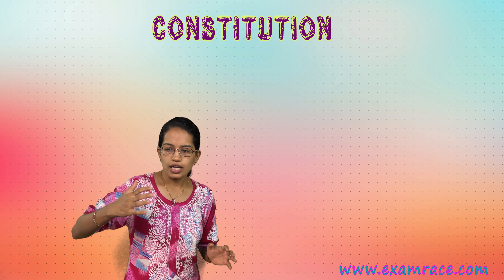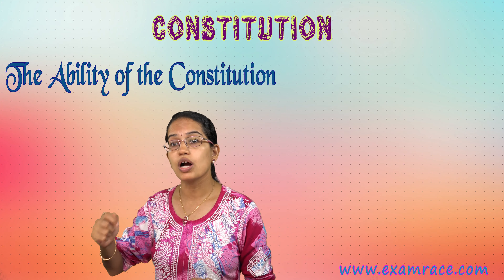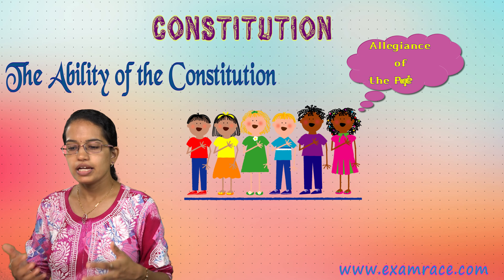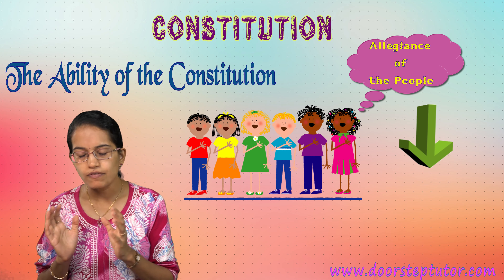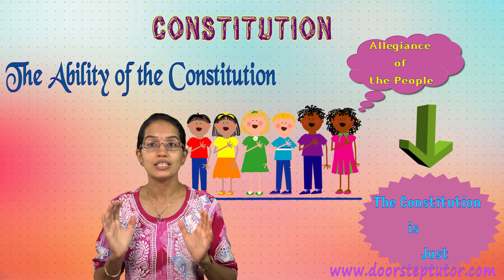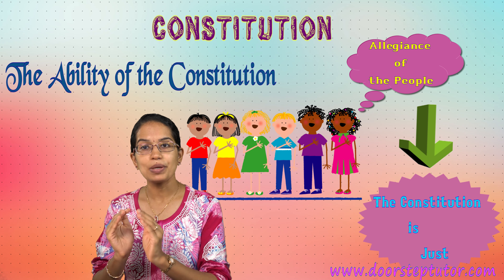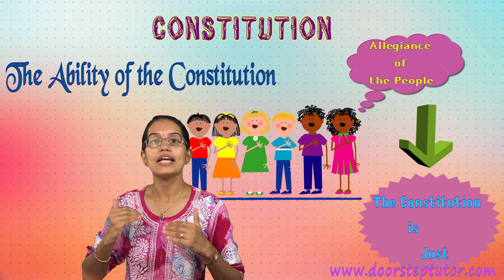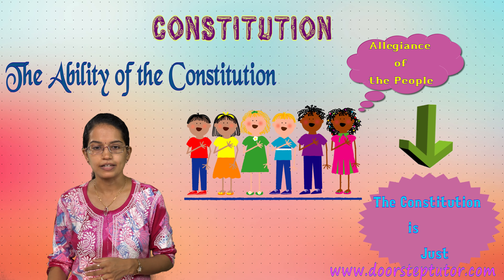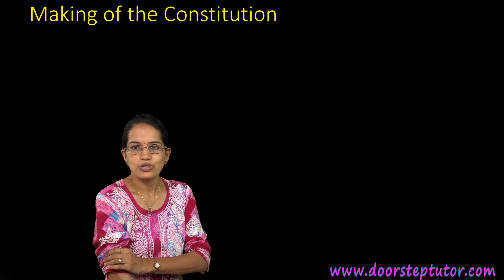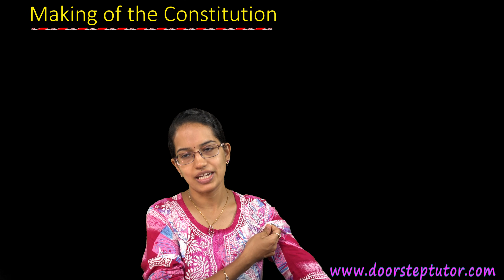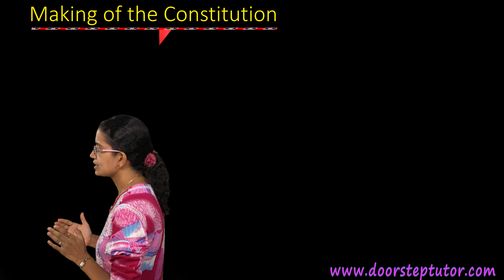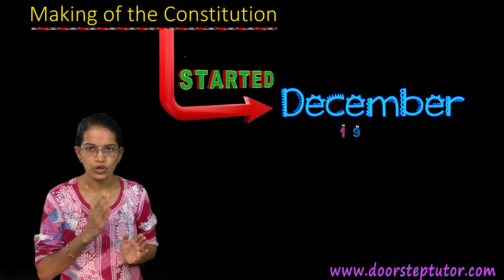Bringing in the right balance is very important — a constitution should be a balanced institutional structure. The ability of the constitution to command allegiance of the people is dependent on the fact that the constitution is just. Only when people have faith that the constitution is just will there be allegiance from the people. Now we come to the most interesting thing: the making of the Indian constitution, which started in December 1946.